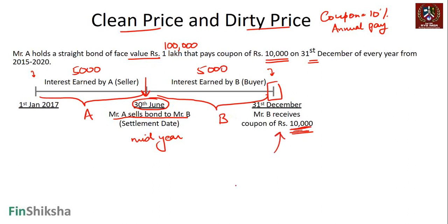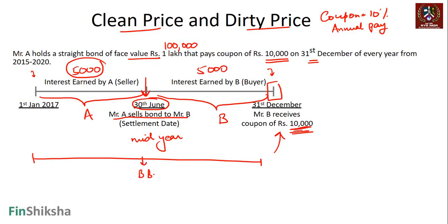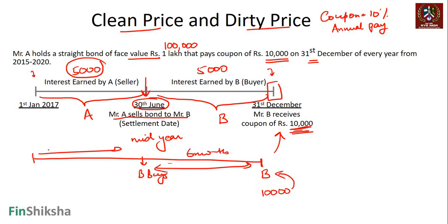So how does person A ensure he gets his due 5,000 rupees? The company that issued the bond will simply see who holds the bond on the payment date — they see B holds it, so they give 10,000 to B, even though B has only held the bond for six months. The first six months it was with A, so A should be entitled to 5,000 out of the 10,000. Since the company will only pay B, A must ensure that when selling the bond to B, the 5,000 is incorporated in the sale price.